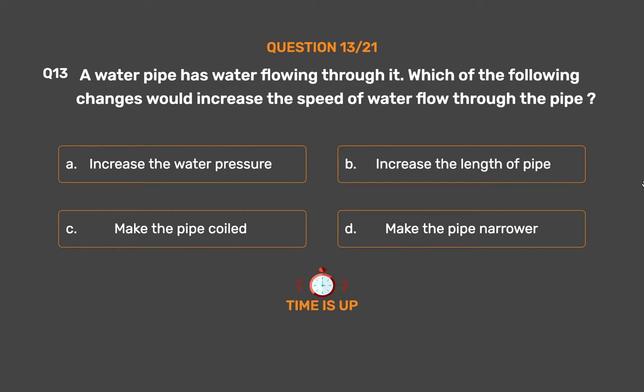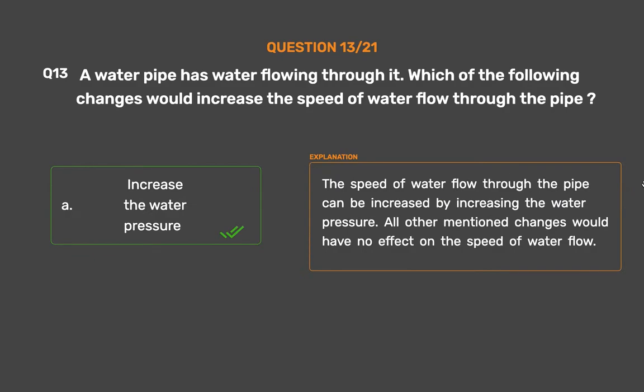The correct answer is Option A: Increase the water pressure. The speed of water flow through the pipe can be increased by increasing the water pressure. All other mentioned changes would have no effect on the speed of water flow.